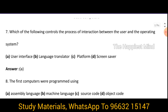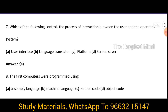Question 7: Which of the following controls the process of interaction between the user and the operating system? It is option A — user interface. The user interface is the process which controls the interaction between the user and the operating system.